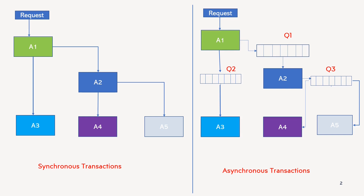A1 is just pushing its messages to Q1 and Q2, and it is the responsibility of A2 and A3 to pick up the message and process it. So whenever you can afford delays — for example, if you want to send monthly statements to the customer, suppose for a credit card or bank account — at that time no customer is waiting for that email. So you can utilize this type of asynchronous communication, because if there is some delay, it will be tolerable.